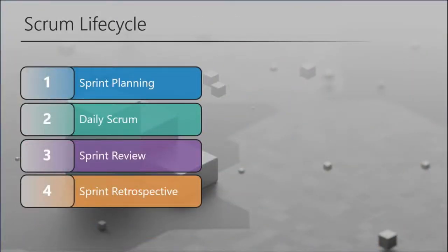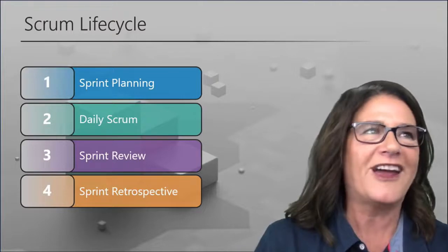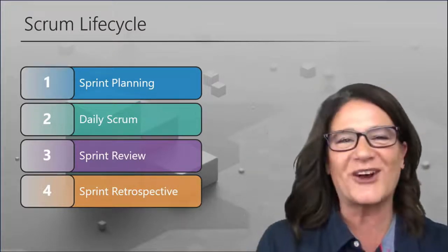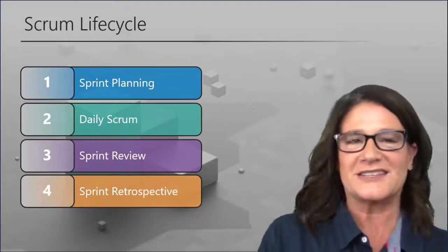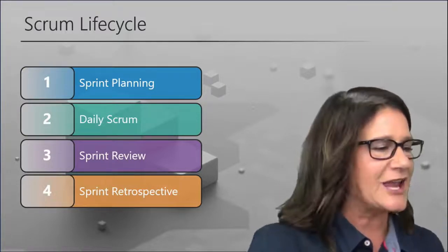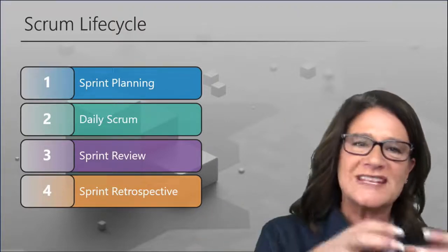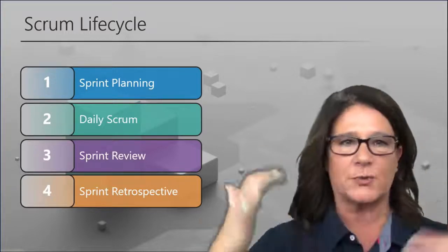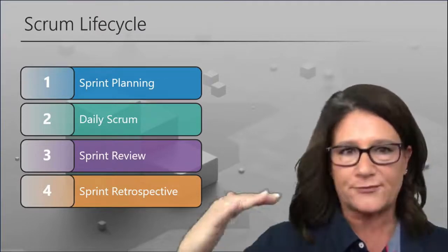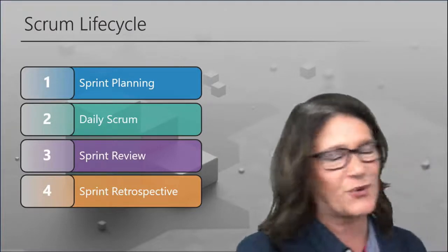Scrum is a rugby term. In rugby, a scrum is when the team links arms and works together to move the ball down the field. It's not like a quarterback throwing to a receiver — the entire team works together. There isn't really hierarchy in true Scrum. Everybody on the team is on the same level. They all have a role to play, but they're all working together to get to the point where they score the goal.